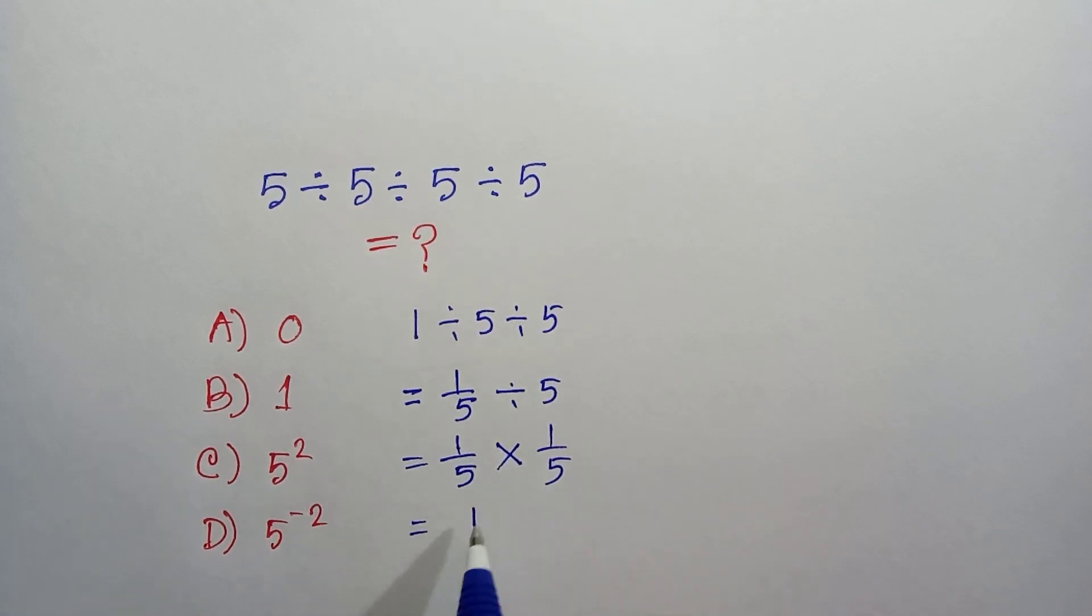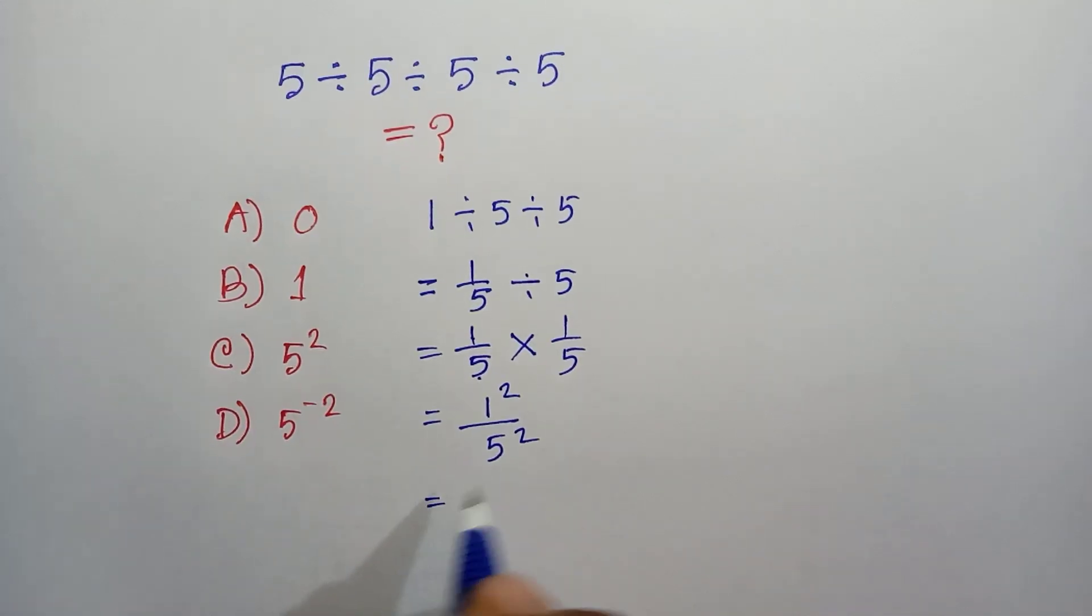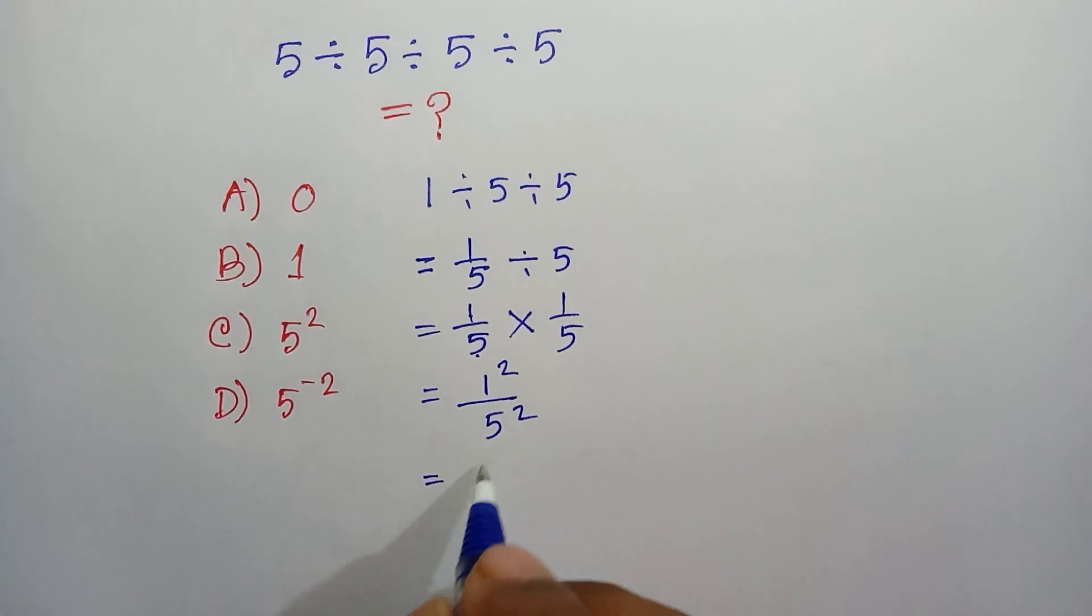Next, 1 times 1 which is one squared, and 5 times 5 which is 5 squared. Here the powers are the same, so it will be one divided by 5.